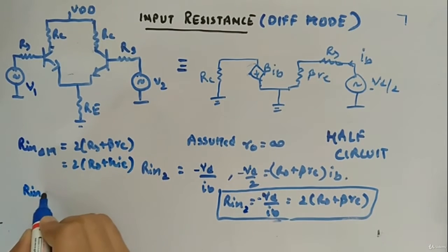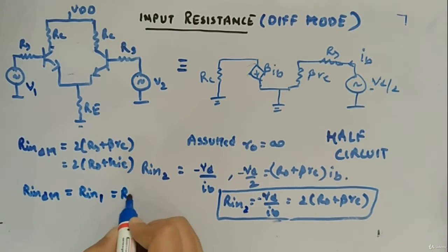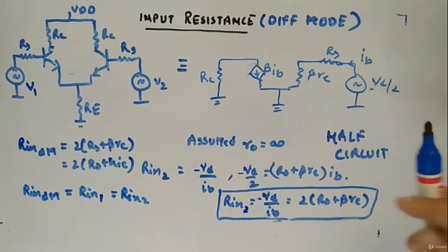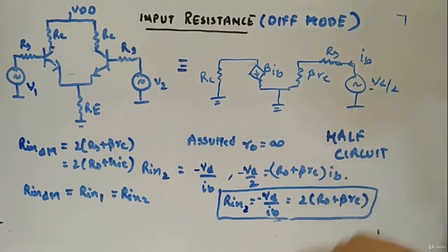Rin differential mode will be Rin1 equal to Rin2. So you can see that in both the cases we have input resistance same, and we are more focused on this input resistance. Now we will look for output resistance.